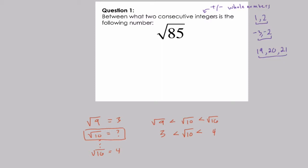You might also be asked which integer the square root is closest to. The square root of ten is much closer to three because ten is very close to nine. Ten is six away from sixteen, but only one away from nine, so it's closer to the square root of nine, which is three.